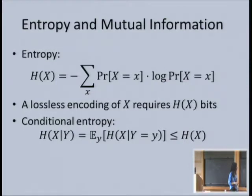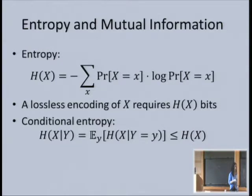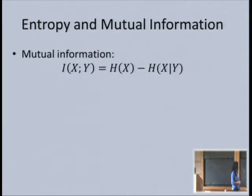You can also define the conditional entropy of X conditioned on Y—the expectation over all values of Y of the entropy of X when we condition on that particular value. When you condition on a random variable, the entropy cannot go up. I'm adding information, so on average the entropy can only go down. We'll use mutual information extensively today.